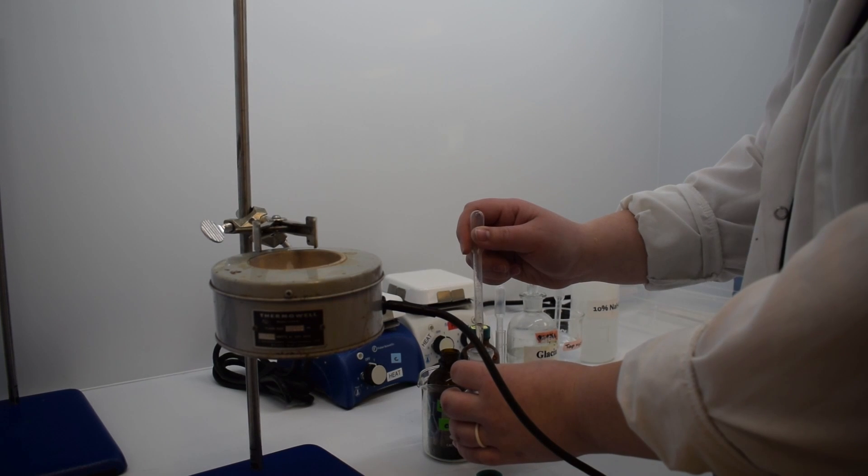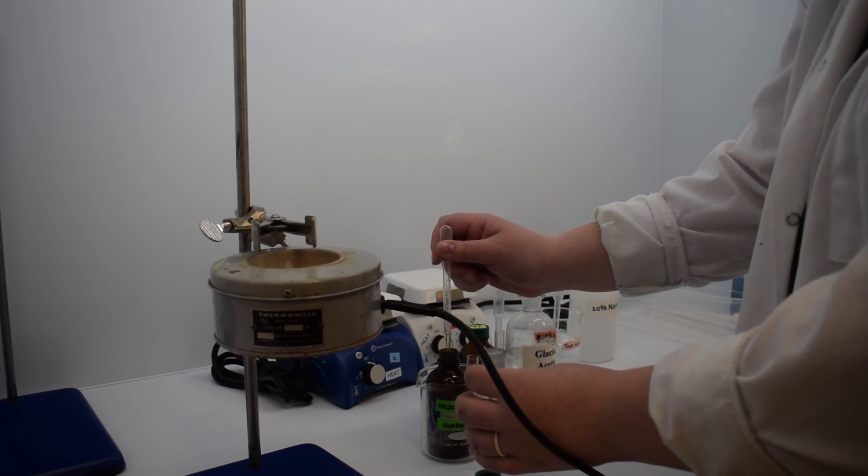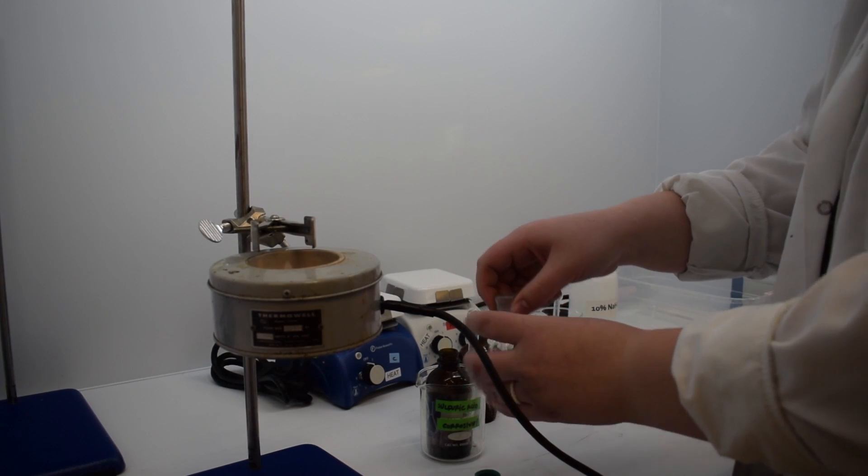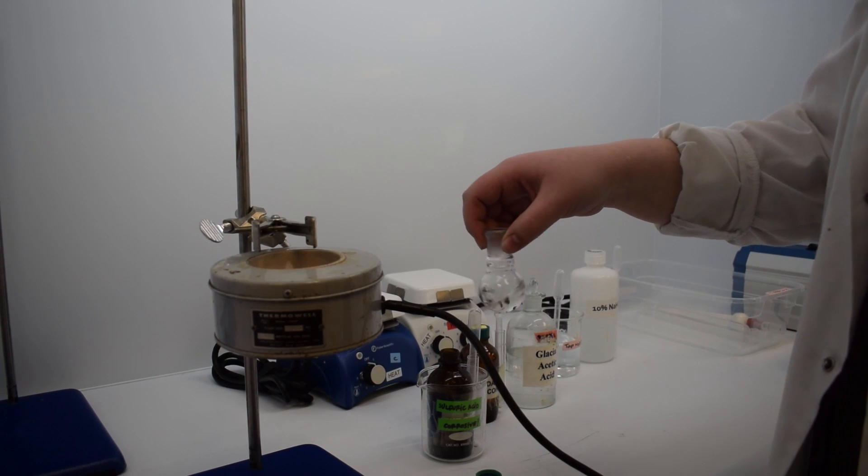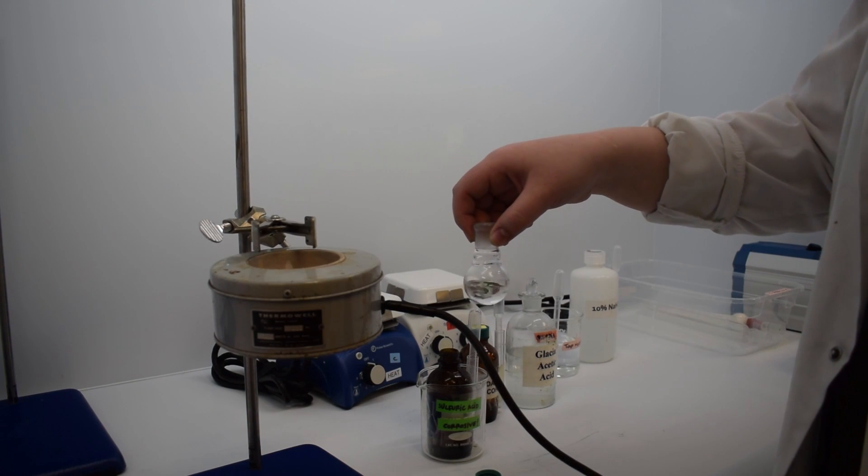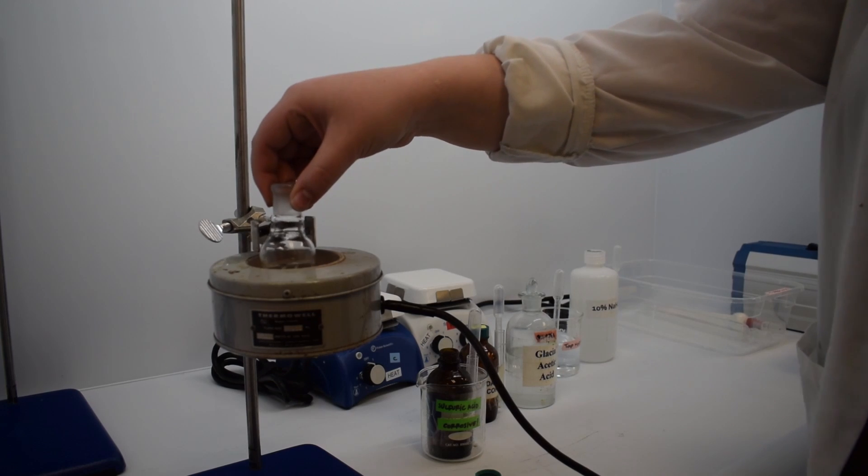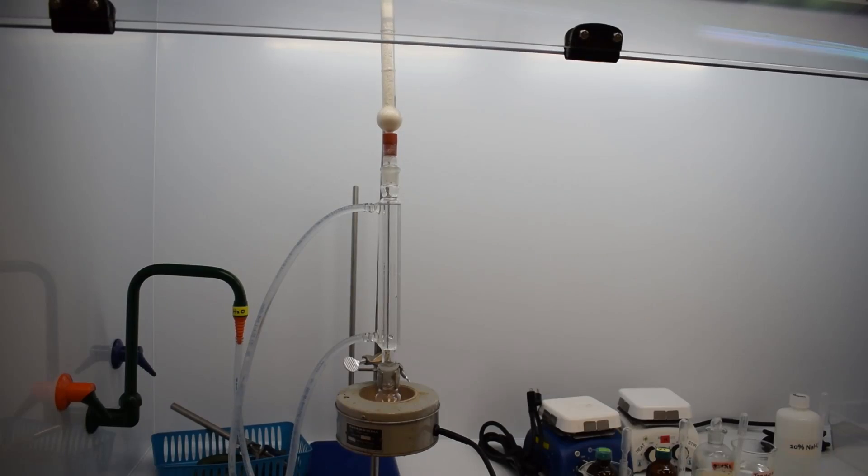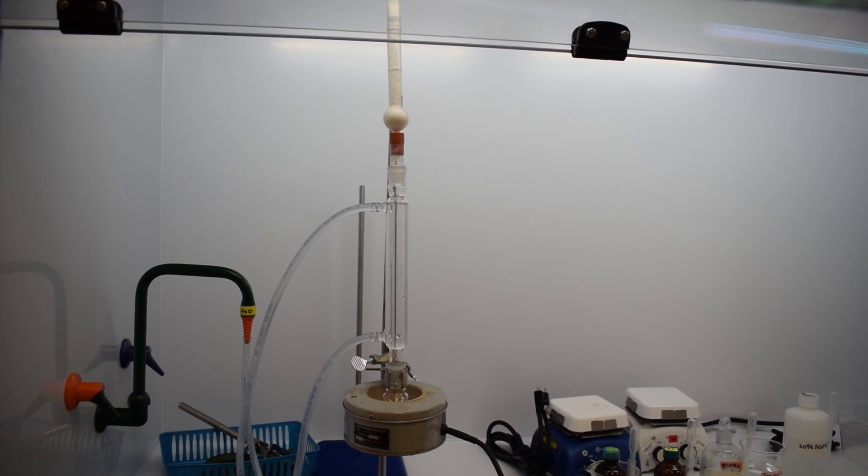Following the addition of all our reactants and catalyst, we'll give that flask a little swirl to mix it all together before clamping it to the ring stand in a heating mantle. We have now set up the reflux apparatus.